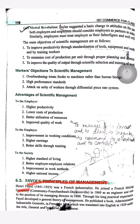Henry Fayol's life started from 1841 to 1925. He was a French industrialist. He joined the French mining company Commentry, Fourchambault and Decazeville in 1860 as an engineer, and rose to the position of its managing director in 1888.